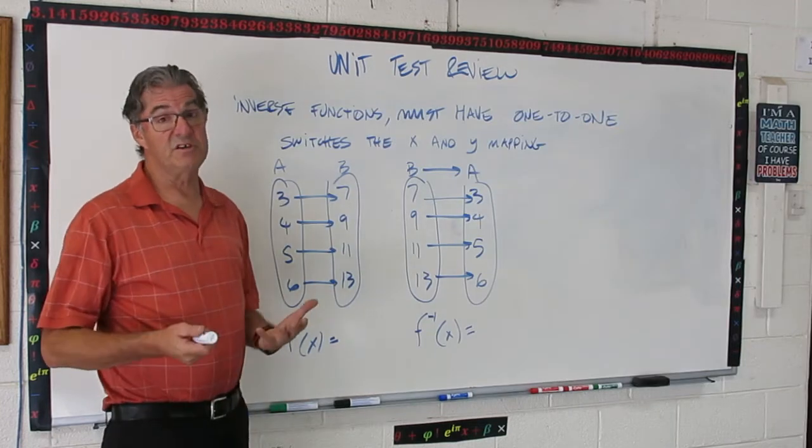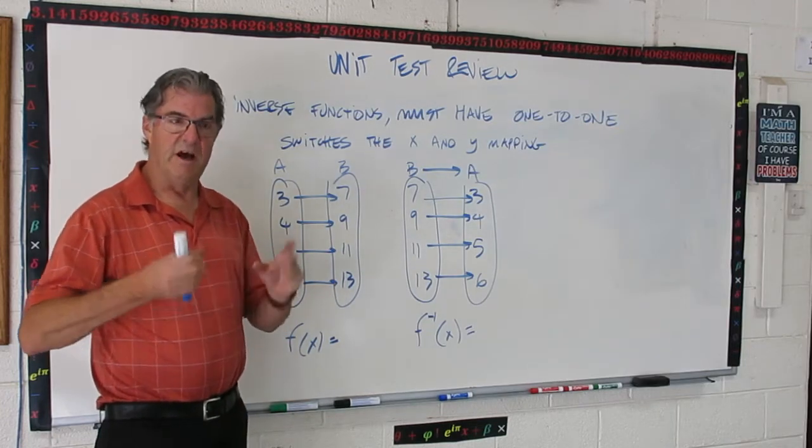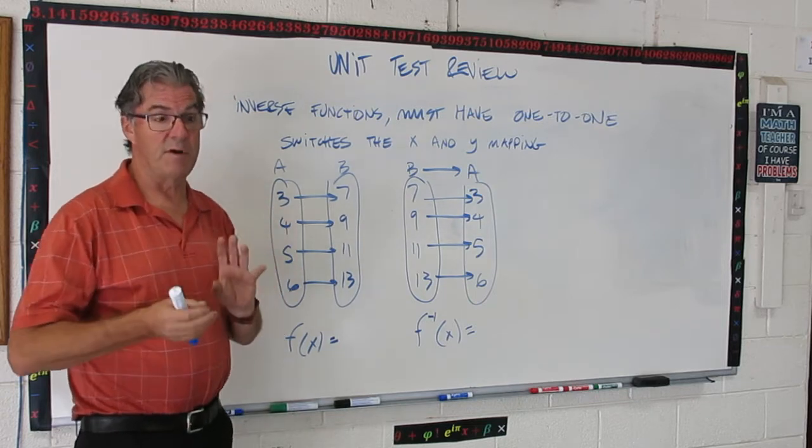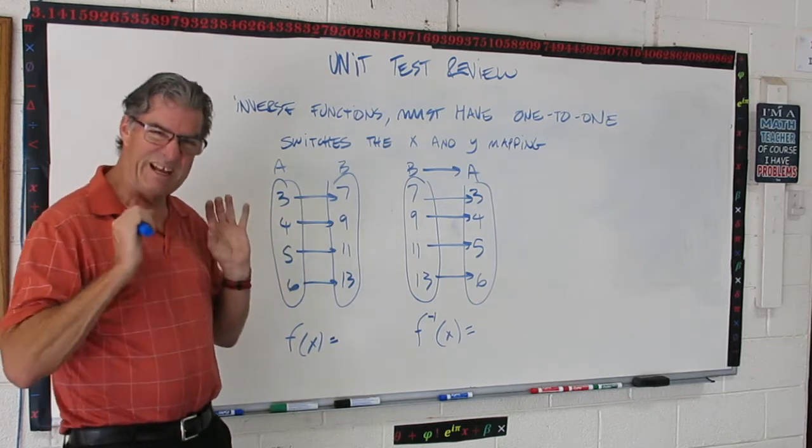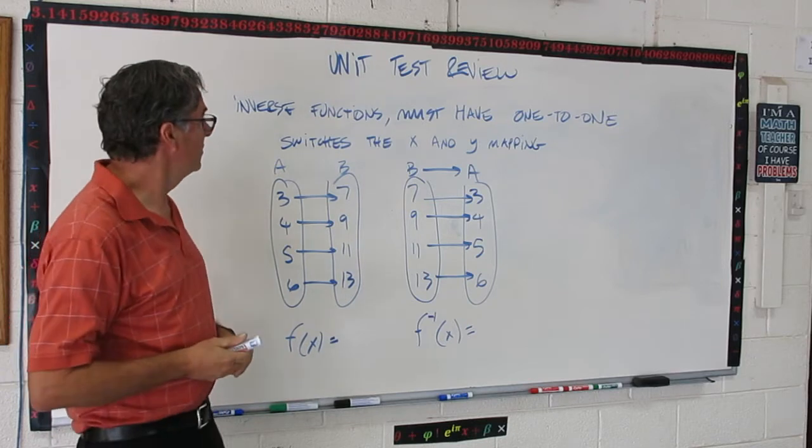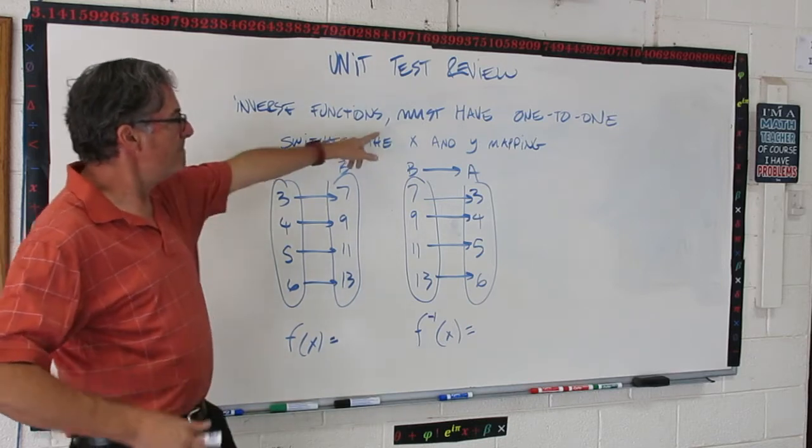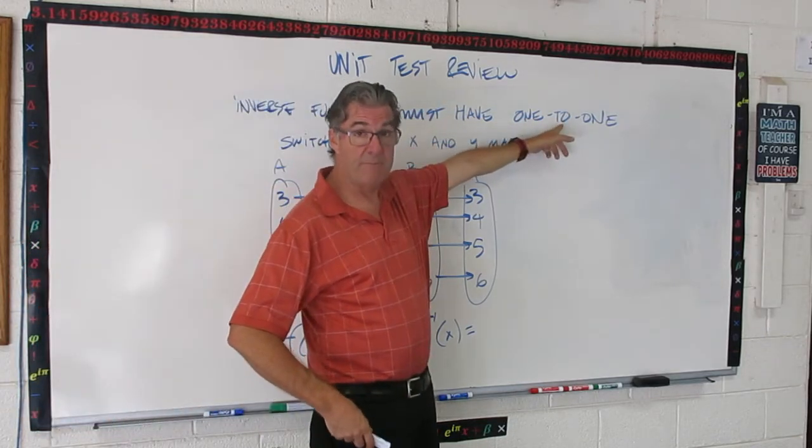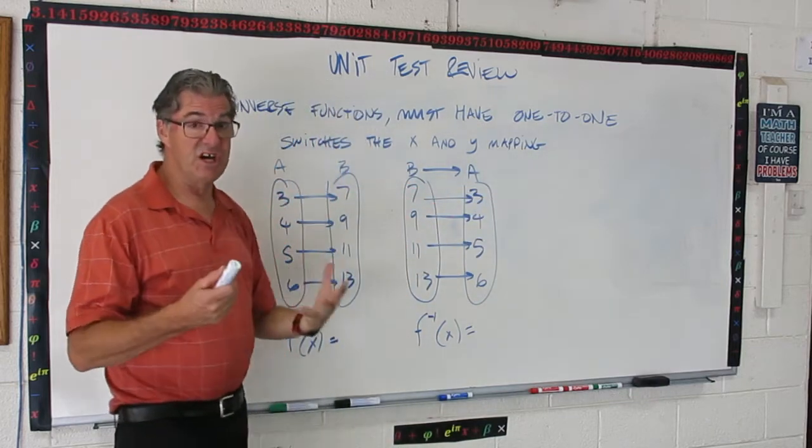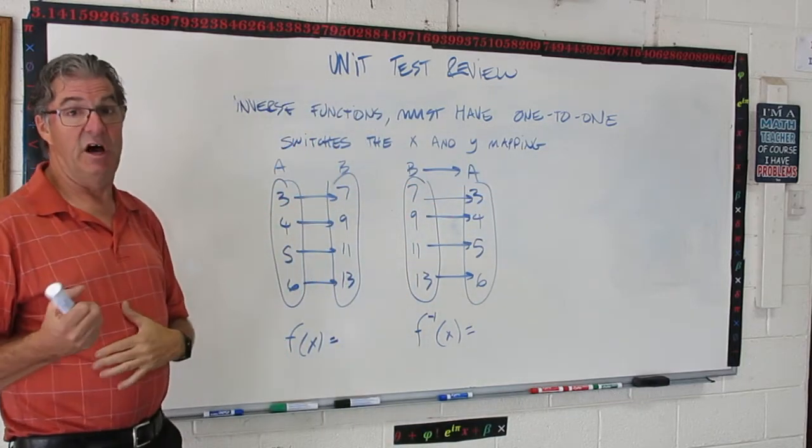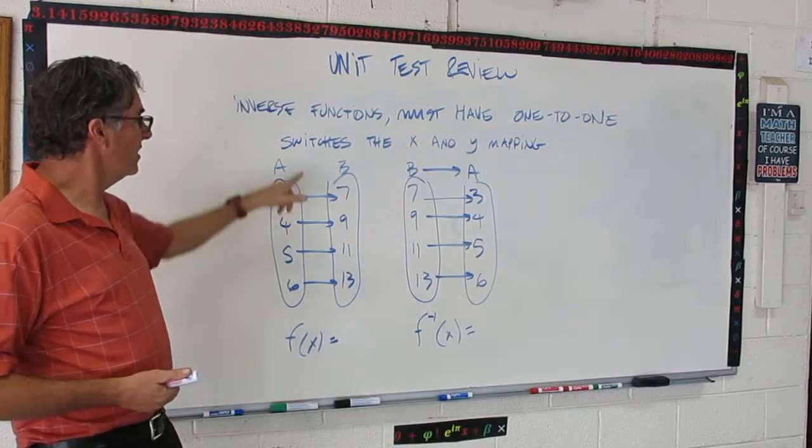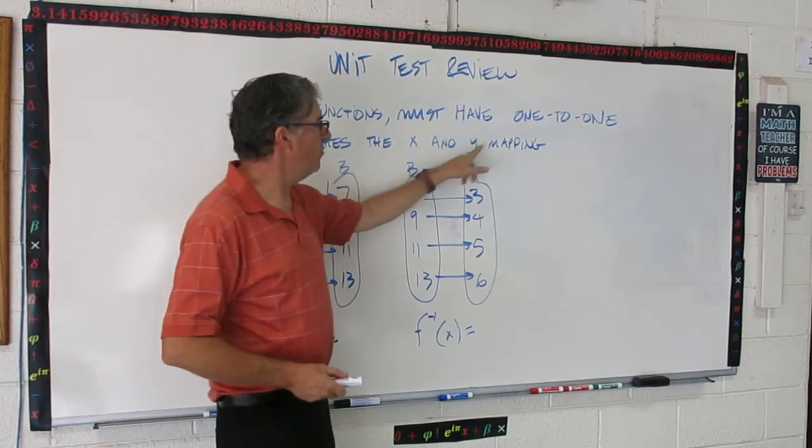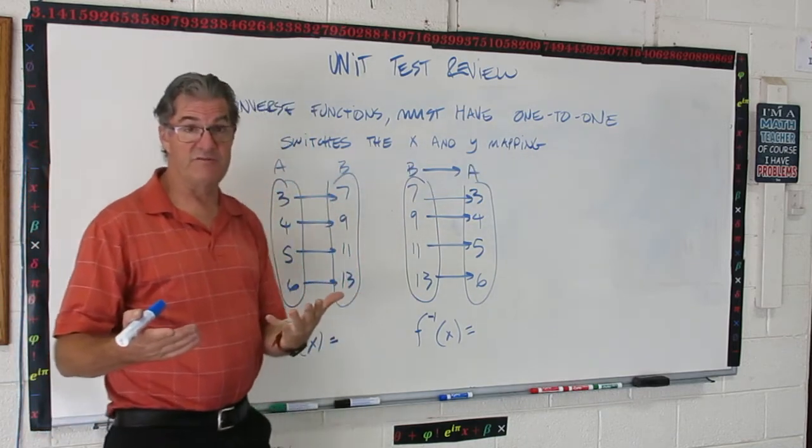So, next we talked about inverse functions, and this was a little tricky. I think, ultimately, it's pretty straightforward, but you might have to put in a little extra effort just to get the concepts right. So, an inverse function must have a one-to-one mapping or a relationship. If it doesn't, you can't have an inverse of that function. So, let's take a look. It switches the x and y mapping. That's basically what an inverse function does.